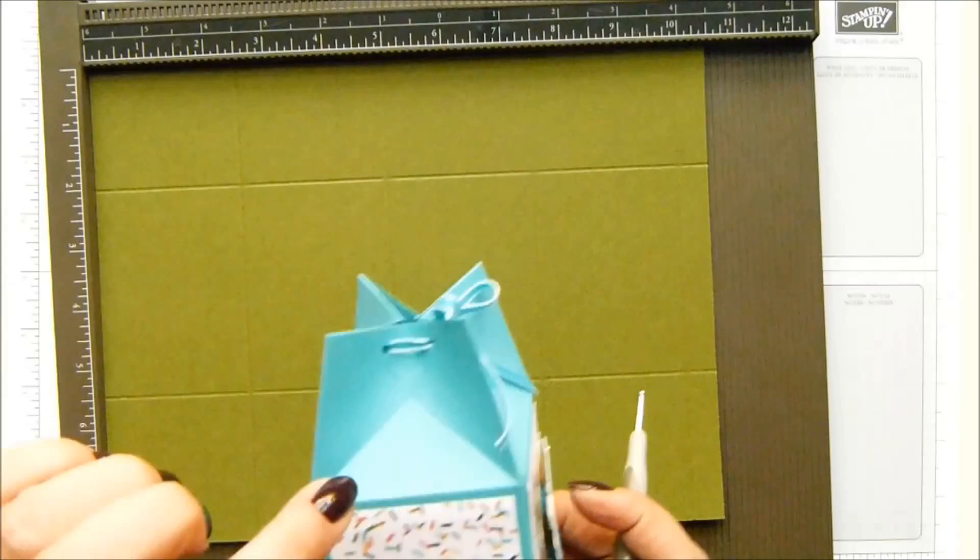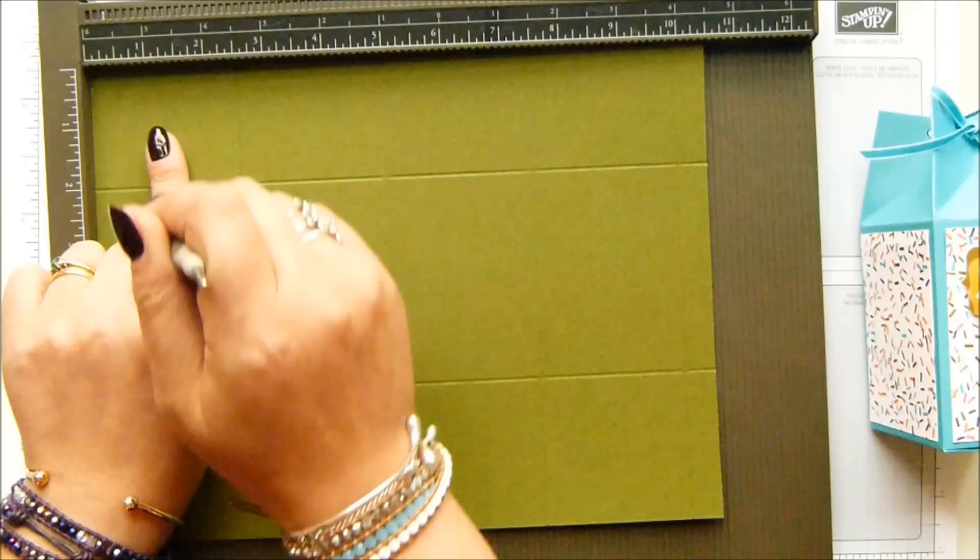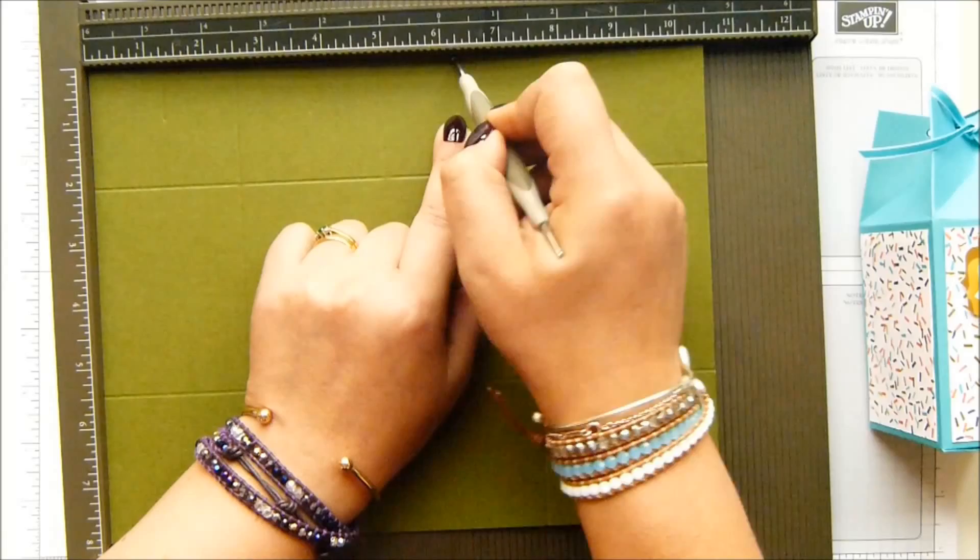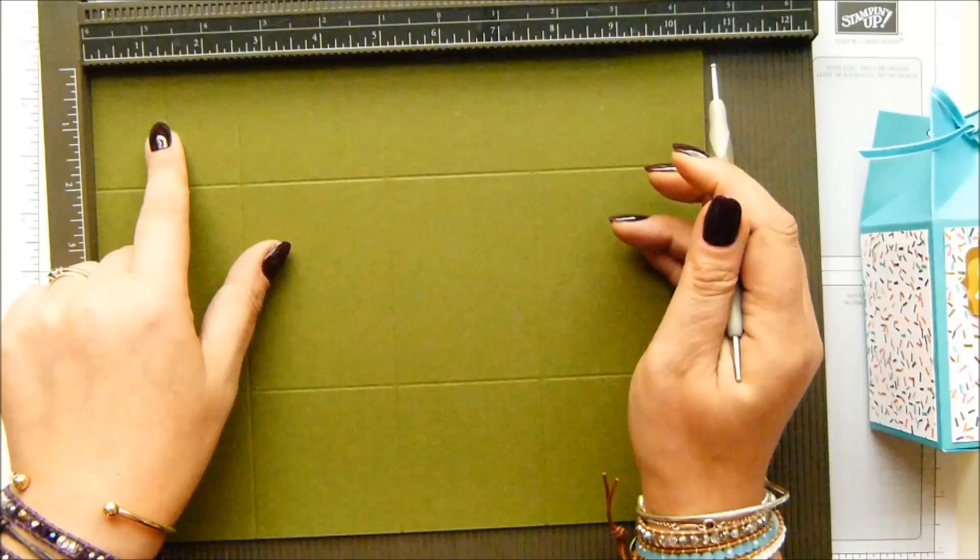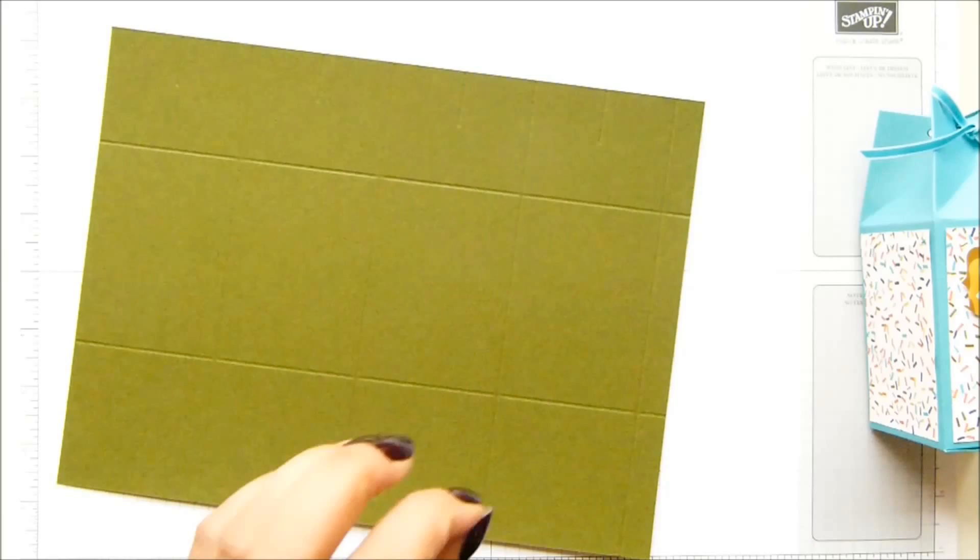Those are the full scores. Then we're going to do some part scores. Put your finger at about the one inch mark. You only want to score that far down. Part score it at 1 and a quarter, 3 and three quarters, 6 and a quarter, and 8 and three quarters. In metric that is 3.25, 9.75, 16.25, and 22.75.